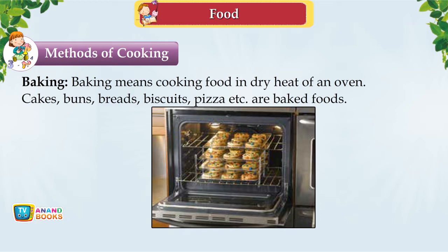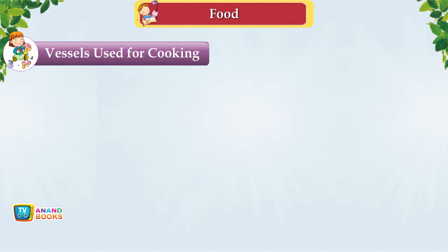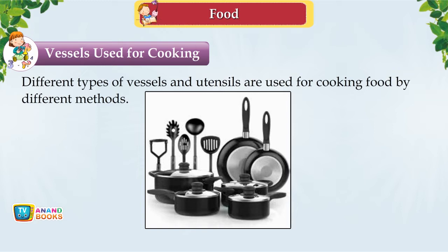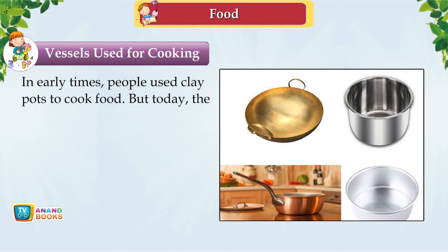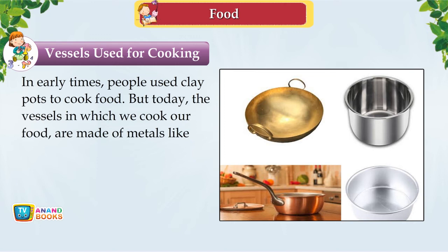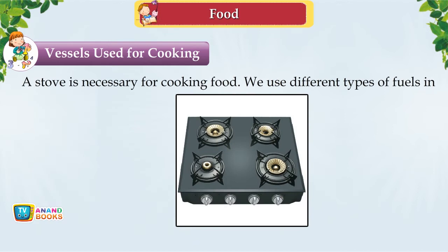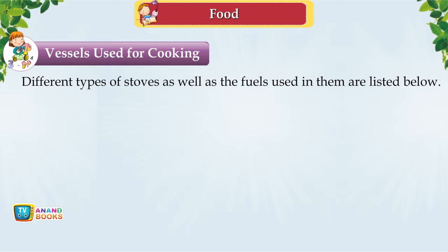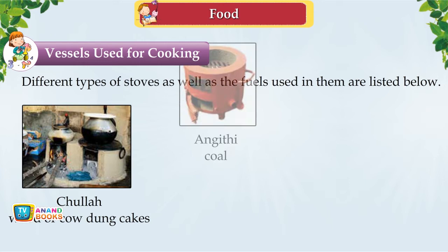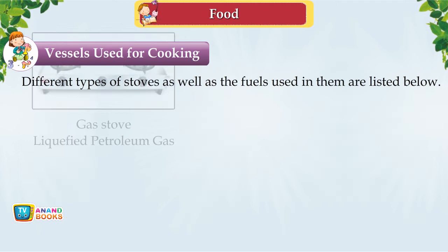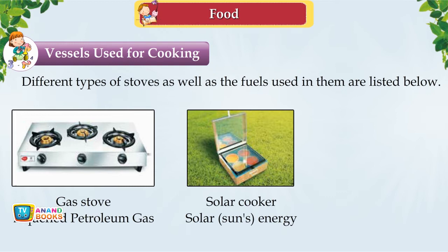Vessels used for cooking. In early times, people used clay pots. Today, vessels are made of metals like steel, aluminium, copper and brass. Different vessels include frying pans, griddles, kadais and pressure cookers. A stove is necessary for cooking. Different stoves use different fuels: choolha uses wood or cow-dung cakes; angeethi uses coal; kerosene stove uses kerosene; gas stove uses LPG; solar cooker uses solar energy; microwave oven and hot plate use electricity.